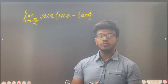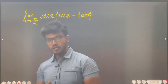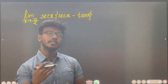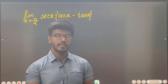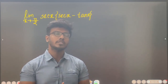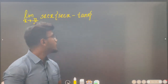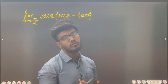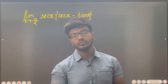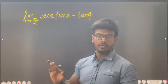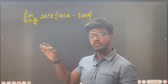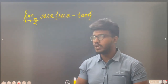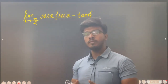Limit x tends to pi by 2. Let's do this. If we have a value, the limit variable tends to 0. So we have the first target. When we look at this, we check the first target. The first target is 0 by 0 or infinity by infinity form. So this is the first target.